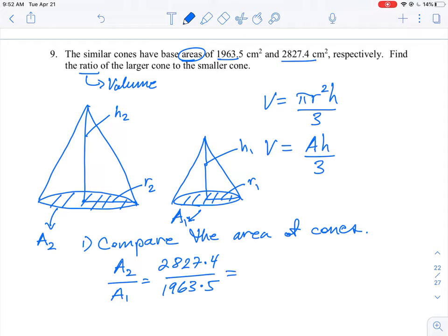We also know that area as a formula is pi r squared. So I'm going to compare the radius squared for the second, the cone A2 here, or volume 2 cone. And we're going to compare that to the radius of the smaller cone, R1.